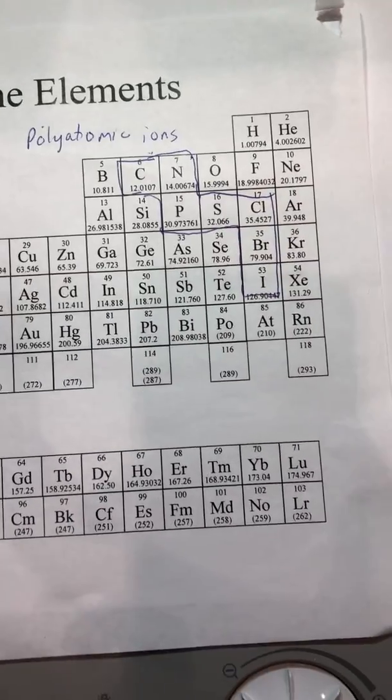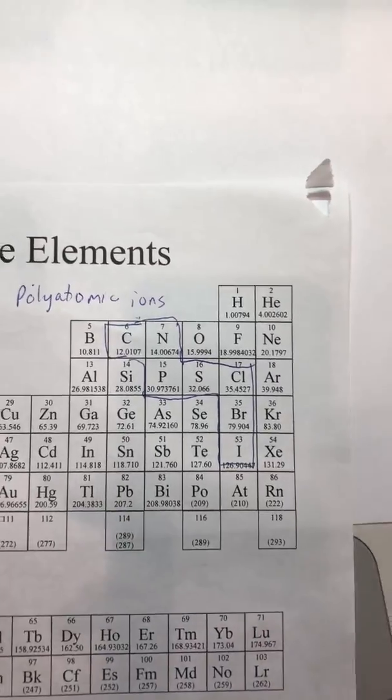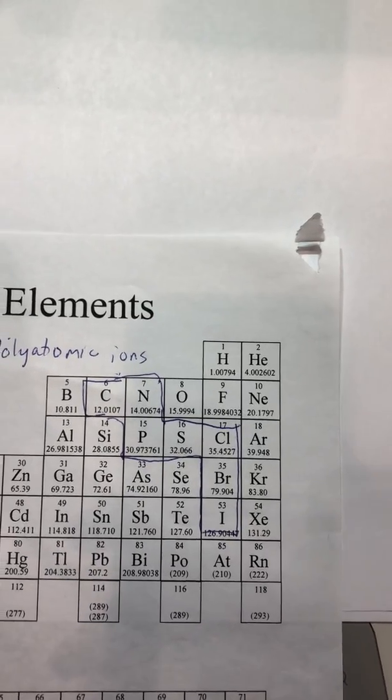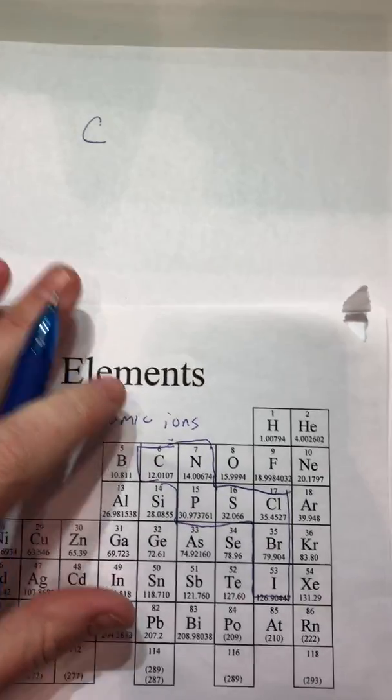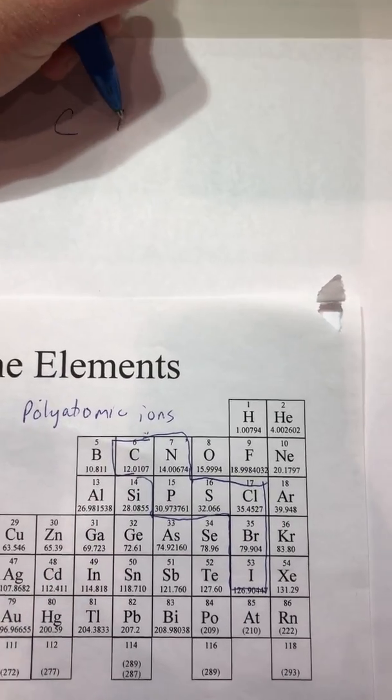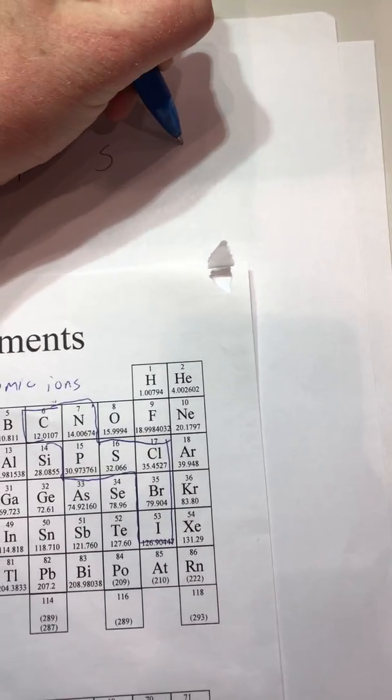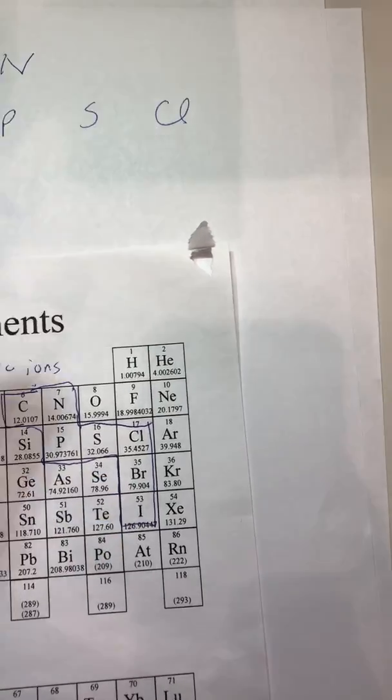So let's go ahead and write those down. You can write it on your periodic table but I'm going to write fresh new ones just so you can see what I do. So we're going to start here with carbon and then nitrogen and under that phosphorus, sulfur, chlorine, and underneath chlorine bromine and iodine.